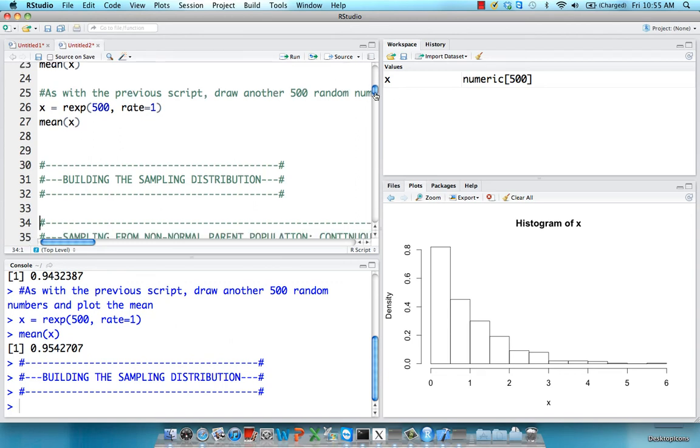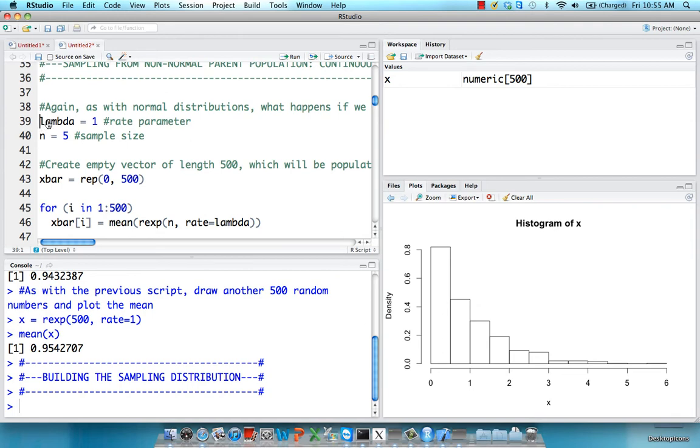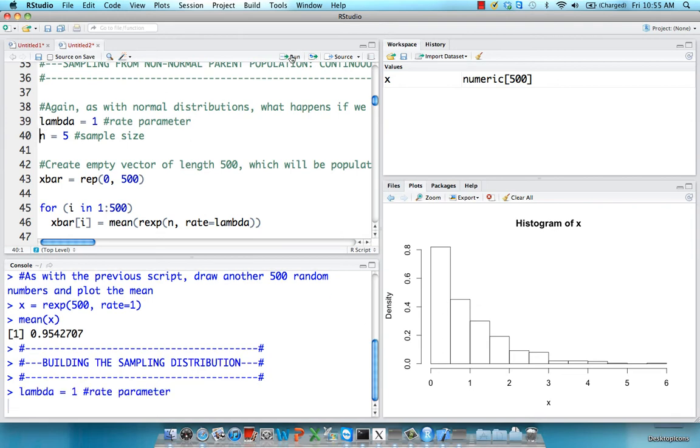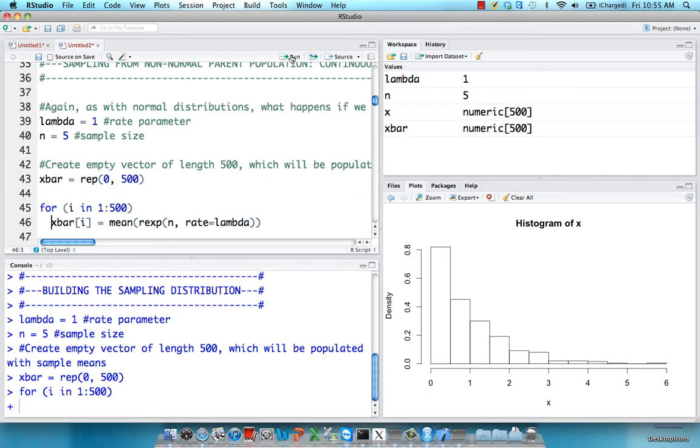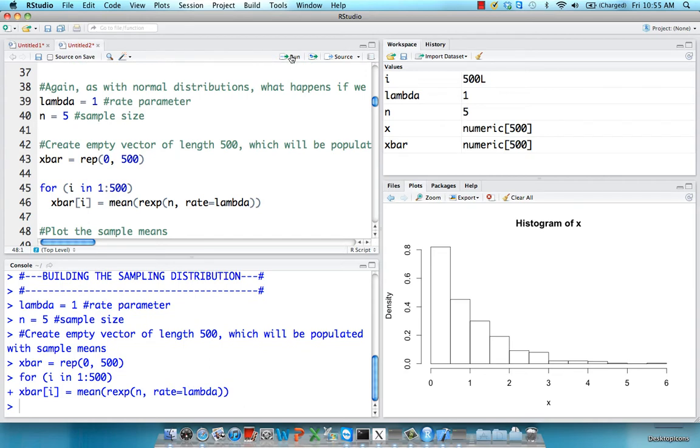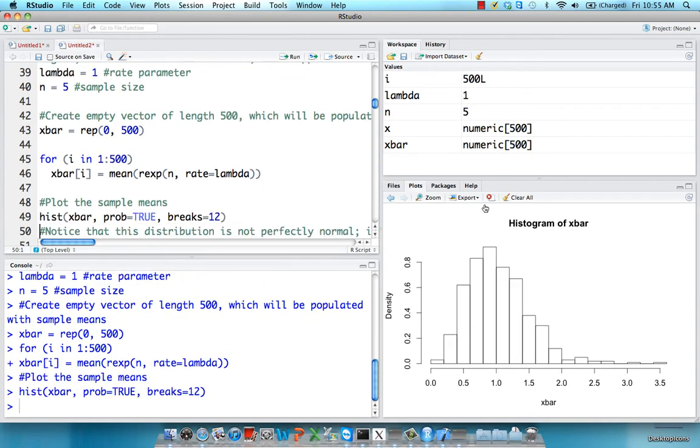So to create a sampling distribution, as before, we can set a certain sample size here, a size of n, and then create a vector which will store each sample mean. So we run a for loop, and then we plot 500 sample means on a histogram. As you can see, it's skewed to the right, as the parent population is, but it does have some aspects of normality.